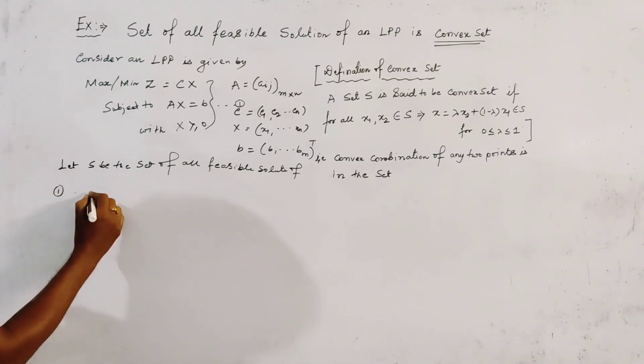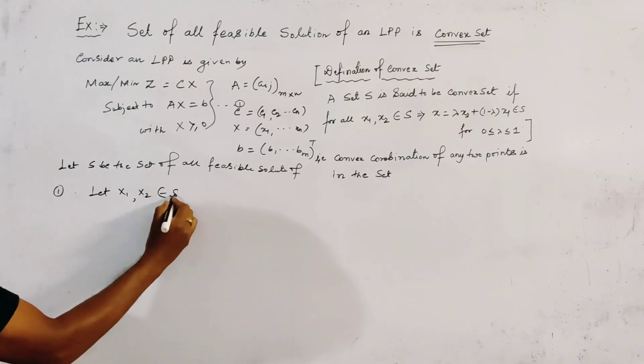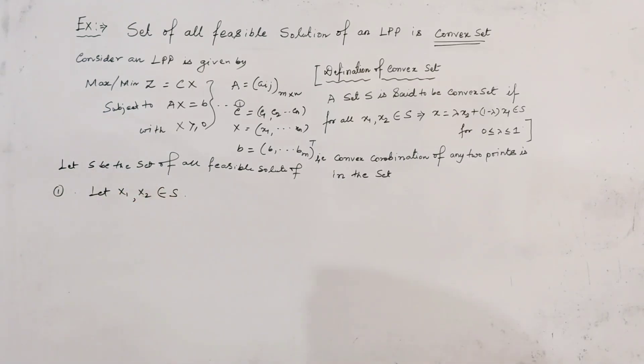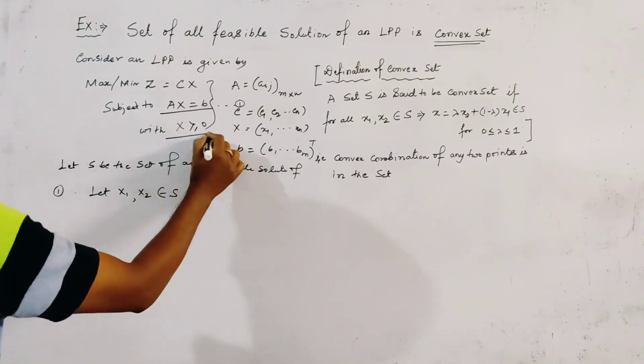If we take, let X1 and X2, or we take here, capital X1 and capital X2, be any two points, be any two points of the feasible region, or feasible set, then it must be satisfied all the constraints.